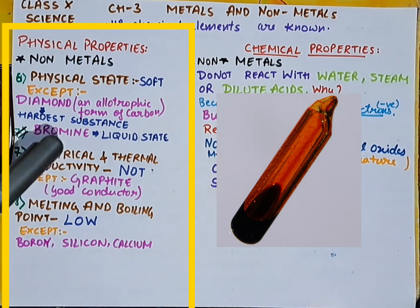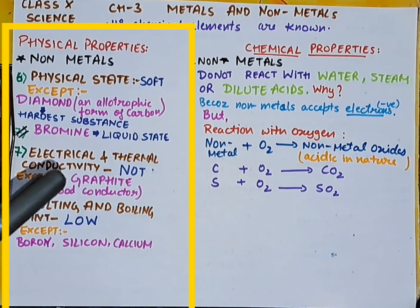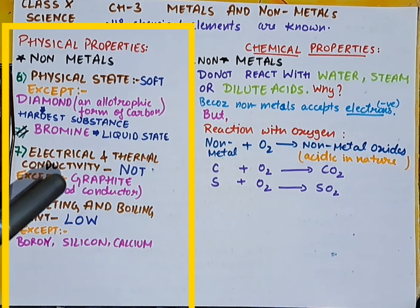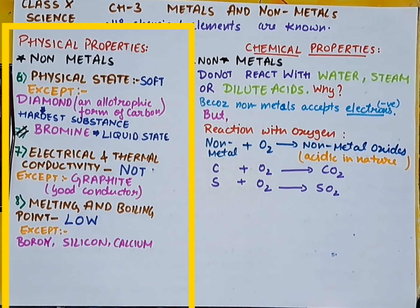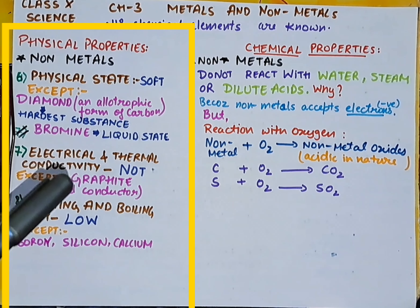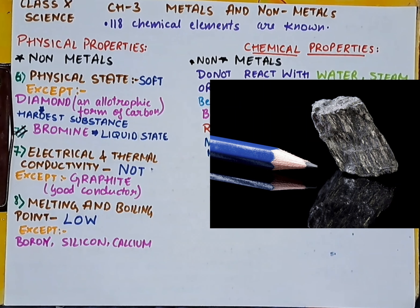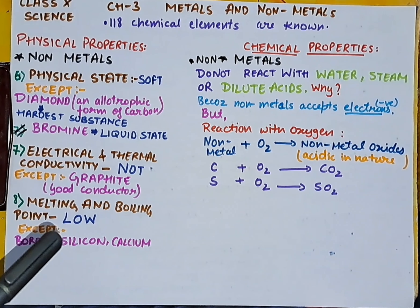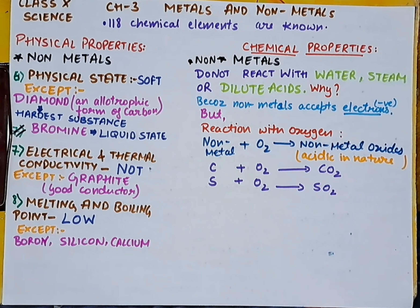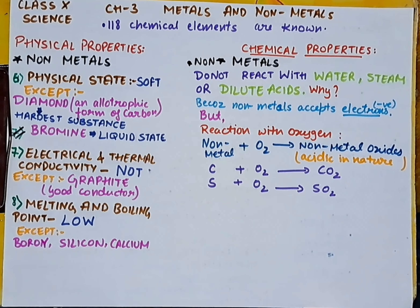Bromine is found in liquid state, so it is another exception for non-metals. Regarding electrical and thermal conductivity: non-metals are not good conductors, with the exception of graphite, which is a good conductor. The melting and boiling points of non-metals are very low, with exceptions: boron, silicon, and carbon, which have high melting points.